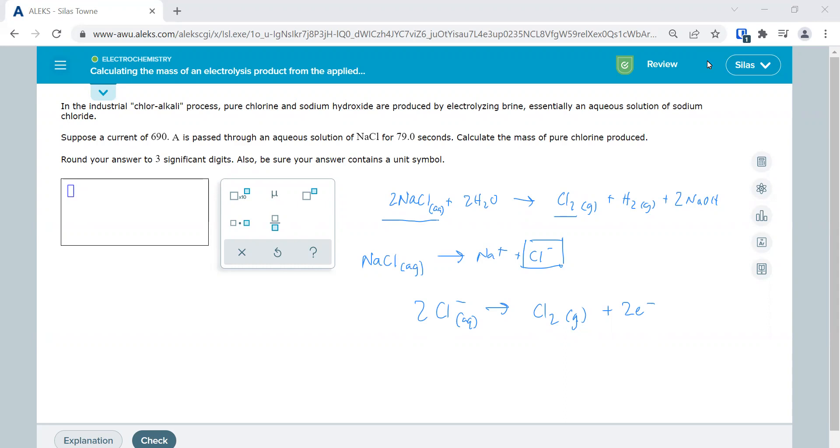So we learned that coulombs are equal to amps times seconds. And we're going to use Faraday's constant, which is equal to 9.65 times 10 to the fourth coulombs per mole of electron. And so that's where this is going to come into play. So we're going to start out by multiplying our 690 amps times our 79 seconds. Now, if that wasn't given in seconds, you'd have to calculate. That gives me 54,510 coulombs.